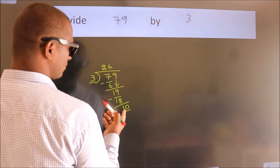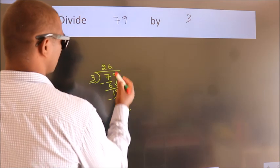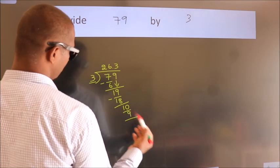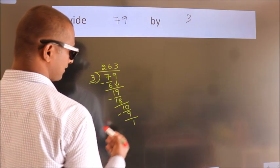A number close to 10 in 3 table is 3 times 3 equals 9. Now we subtract, we get 1.